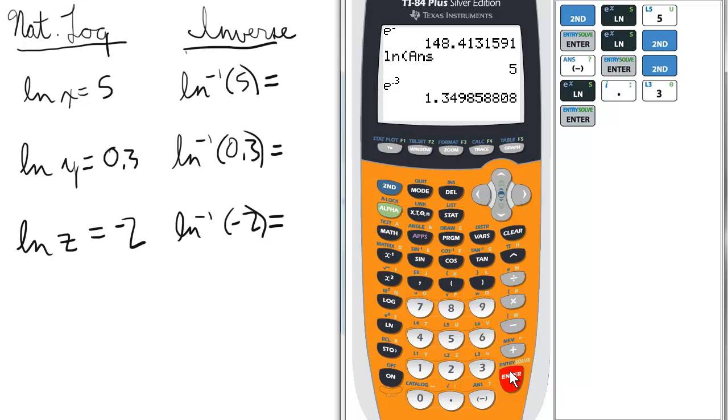Last one, ln of z is negative 2. In the inverse natural log format, ln negative 1 of negative 2.